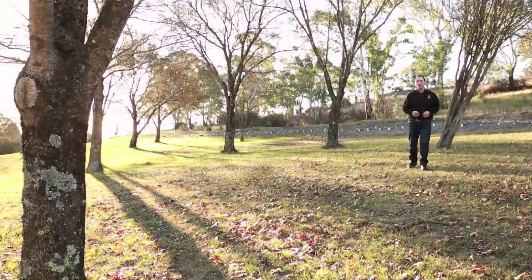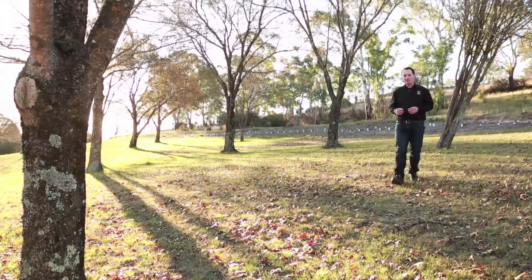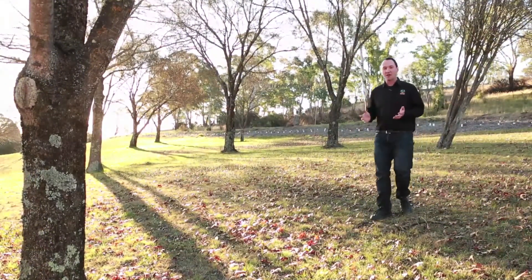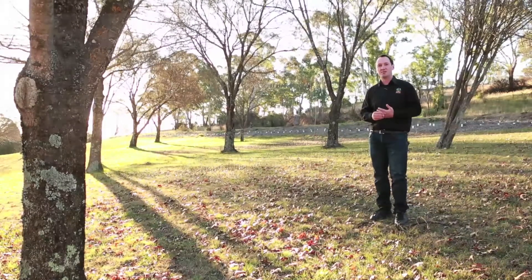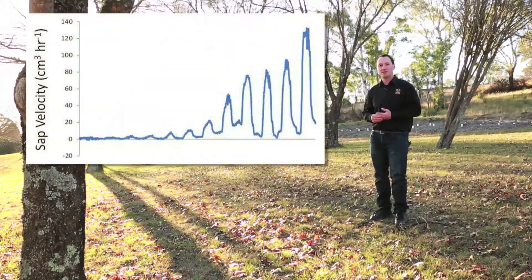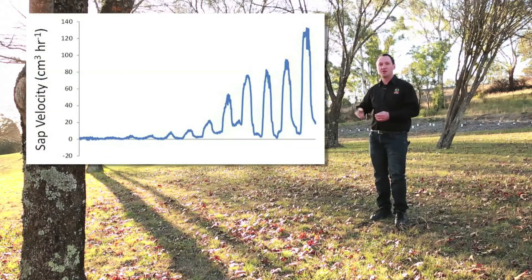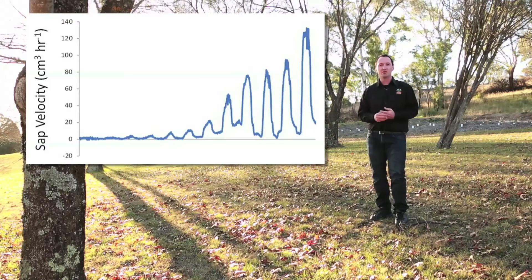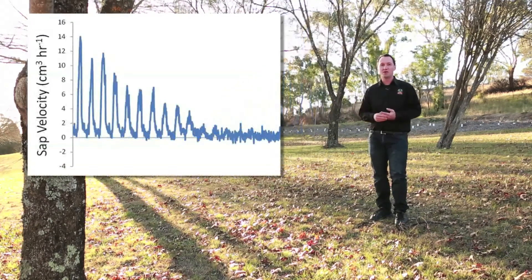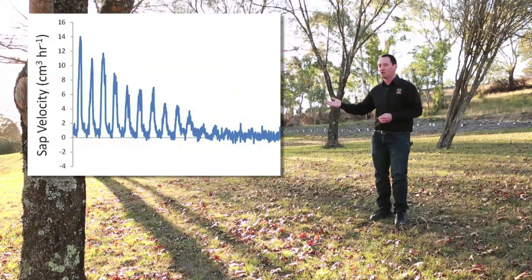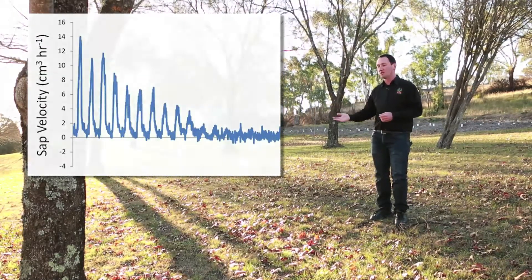It is always interesting to look at sapflow in deciduous species. These trees here are going to undergo budburst in a few weeks time and their sapflow will look something like this. At the moment it is zero, and as the leaves come out sapflow will increase and then take off. At the end of the year during senescence, as leaves fall off the tree, the sapflow will look more like this — sapflow is declining and as the leaves fall off it will eventually go to zero.